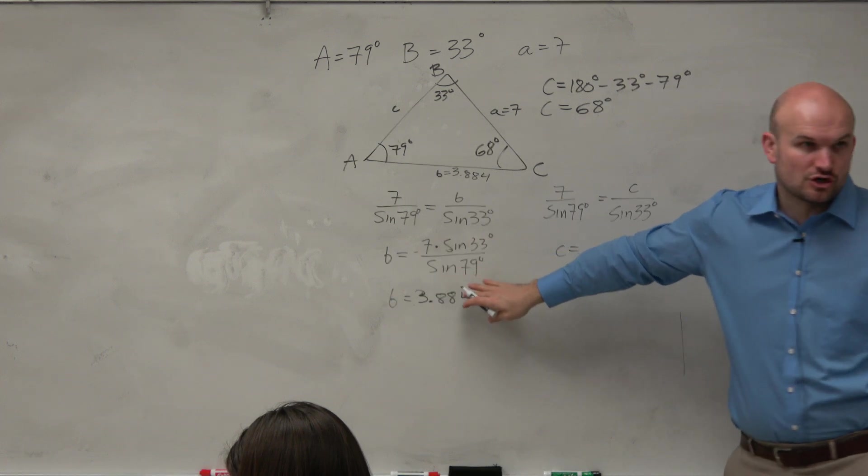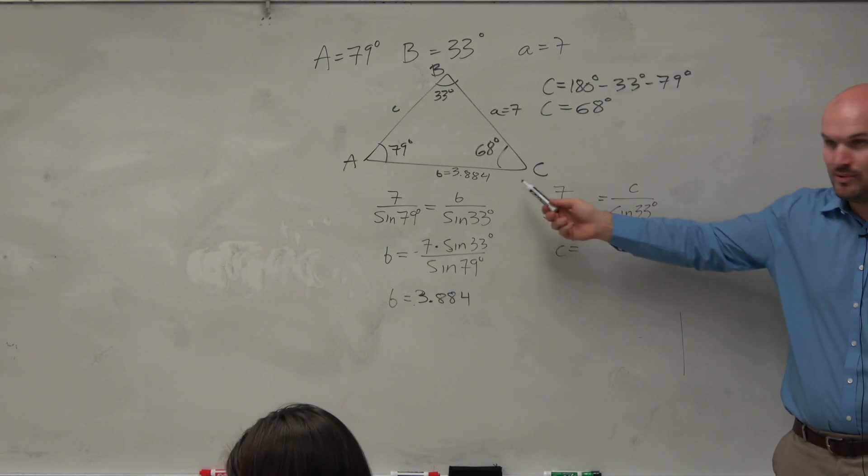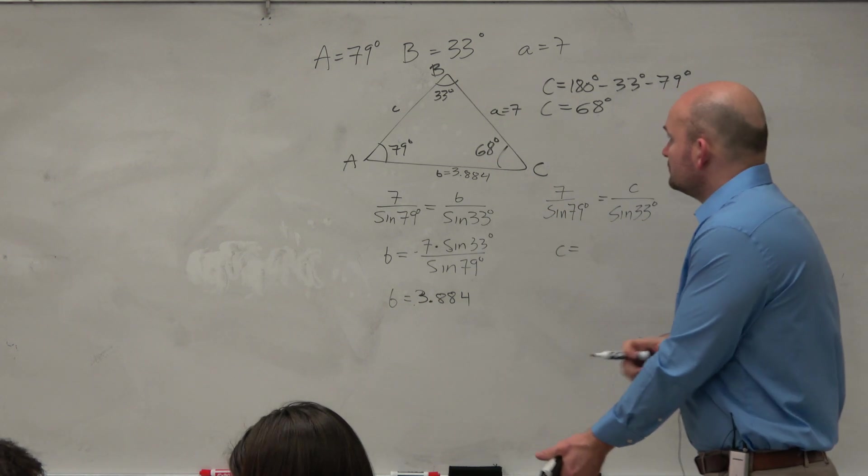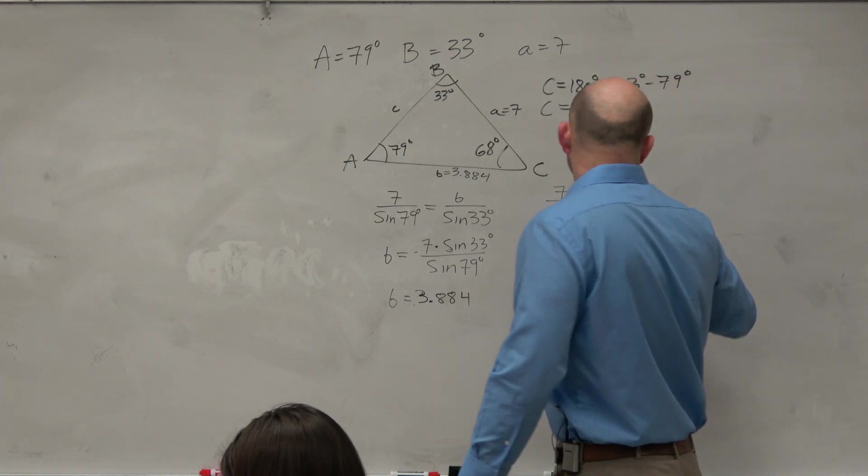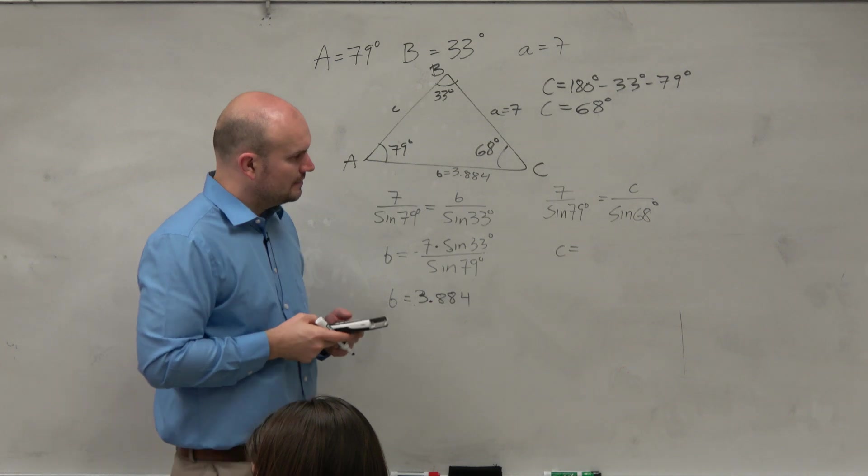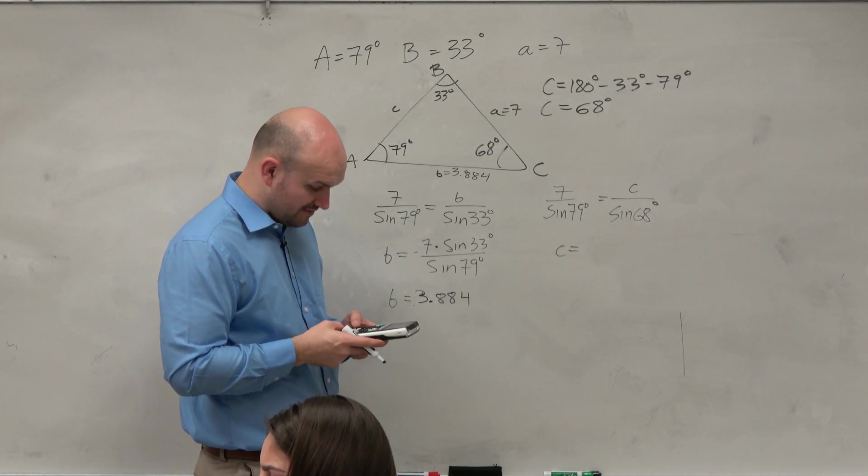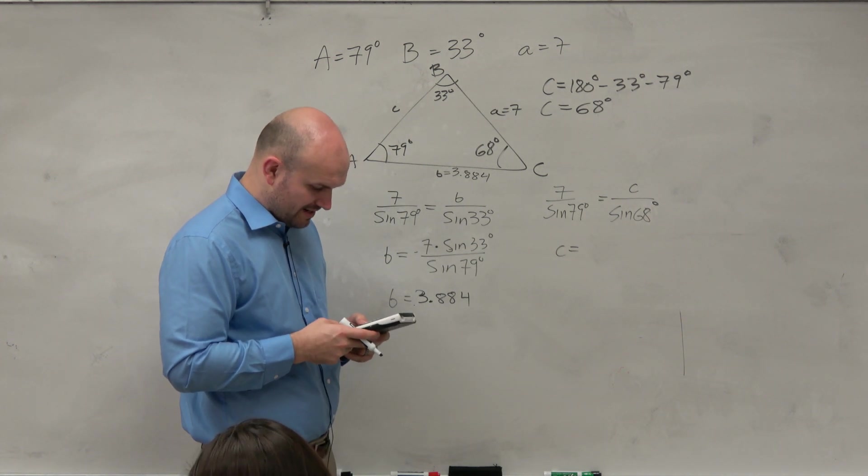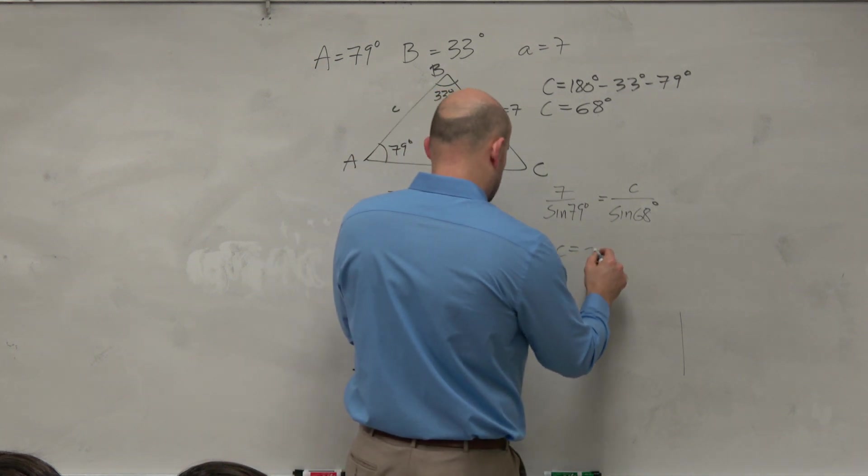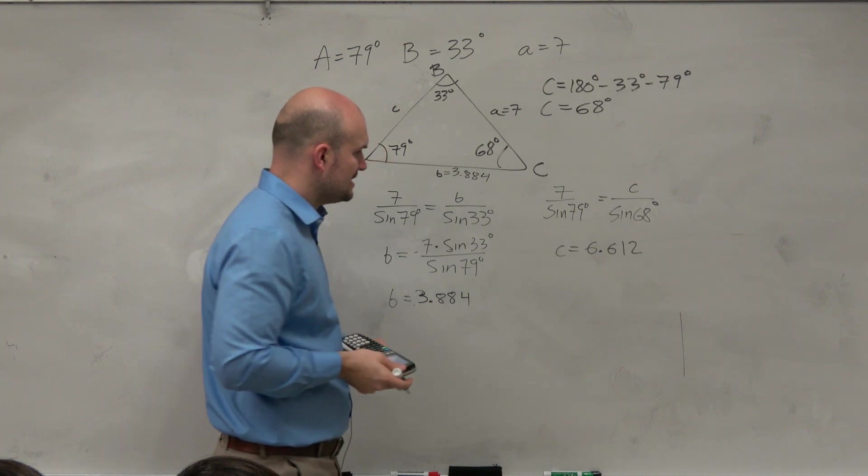Now, you don't need to show me this step. If you go from here, I will assume I'll understand that you can multiply this by sine of 33 degrees. You can just plug it in your calculator. It is sine of 68 degrees. So let's go ahead and do 7 times the sine of 68 degrees and then divide that by the sine of 79 degrees. And we get 6.612 as you round to the nearest thousand.